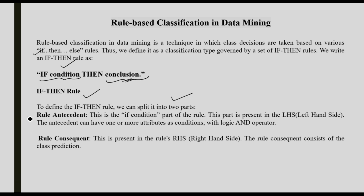The main parts of an if-then rule are: first, the rule antecedent. The antecedent is the condition part of the rule and is present in the left-hand side (LHS). The antecedents can have one or more attributes as conditions.